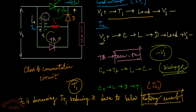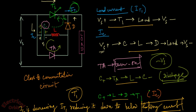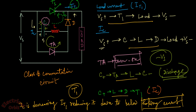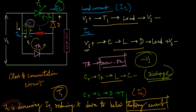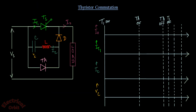You have to understand these current flow paths — once you do, it is not difficult to understand the commutation circuitry of a thyristor. Let me summarize: first, T1 current is flowing. As the capacitor was previously charged, when auxiliary thyristor TA is turned on, the capacitor is negatively charged by the discharging process. Whenever it is negatively charged, the reverse voltage of minus VS opposes the main thyristor current IT1 and reduces it below the holding current.